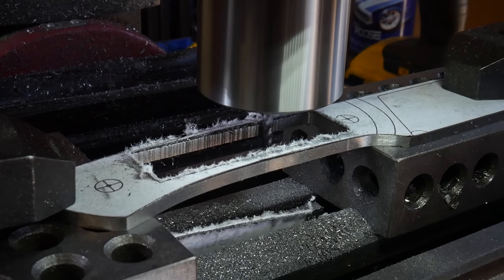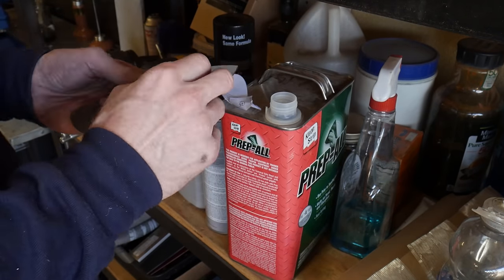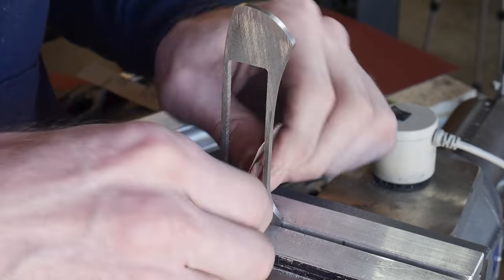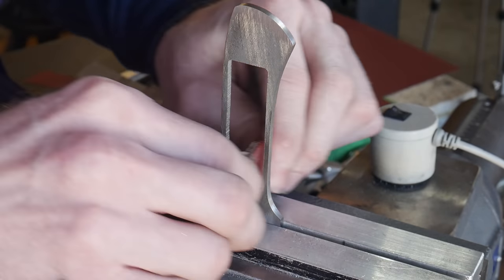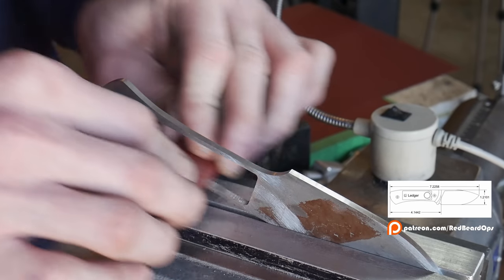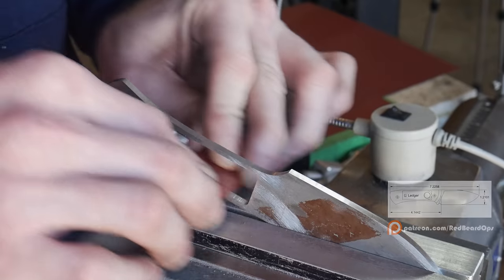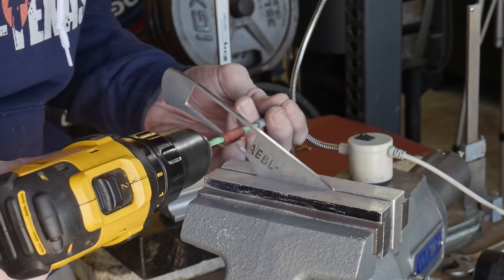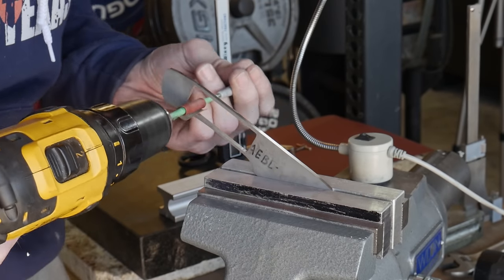I think if I were to do this project again, I would mill the pocket before profiling the blade since it would make it easier to clamp. I'd like to note here that I'll be putting a set of PDF plans for this knife up on my Patreon for my extremely awesome and loyal patrons, so check that out if you want to make one of these knives. I also plan on auctioning this specific knife and will pin the first comment with the auction link.